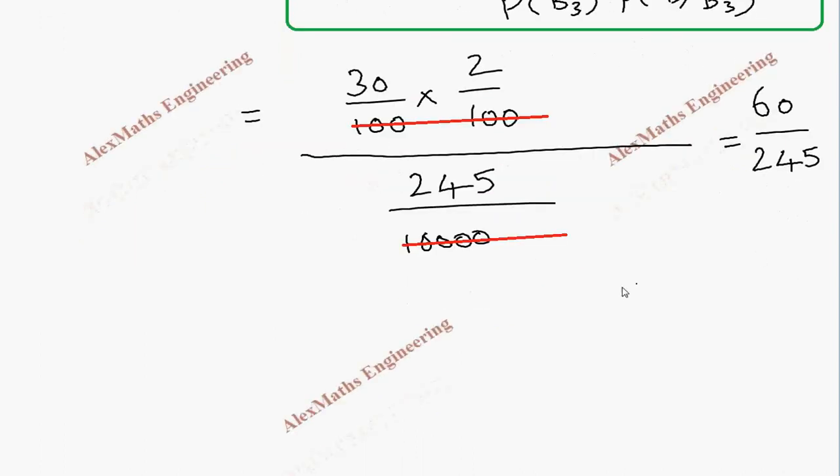And first let's cancel by 5. So, 12 by 49. And after division, we get 0.24489. When I round up, I can write it as 0.2449.